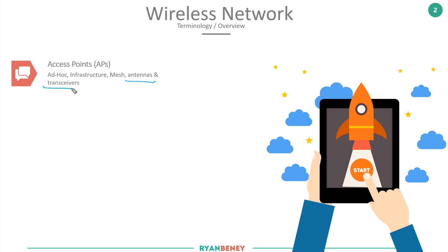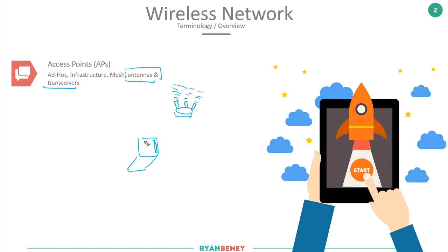The other terminology worth knowing when we talk about APs is antennas and transceivers. An antenna — like the little antenna on your home router or the one built into the side of your laptop screen — is what emits the wireless signal. More antennas generally mean better Wi-Fi, though quality matters too.